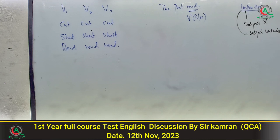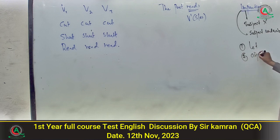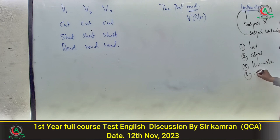Imperative passive کا formula: let + object + be + third form of verb۔ یہاں negative ہے اس لئے not بھی آئے گا۔ 'Do not make a noise' کا passive ہوگا: 'Let a noise not be made۔' Option number B is the correct one۔